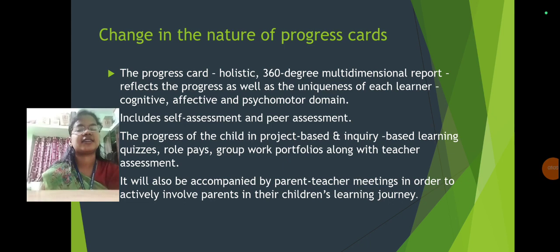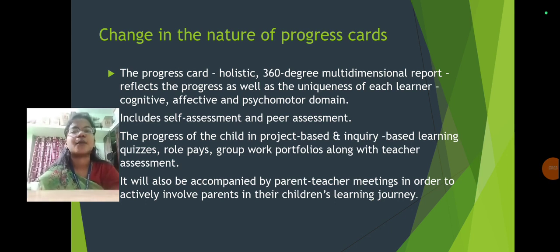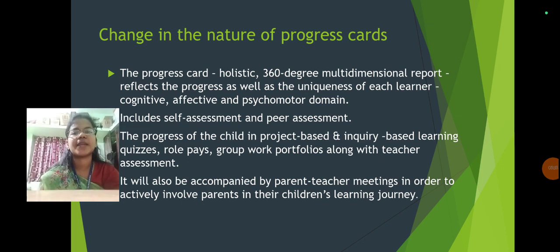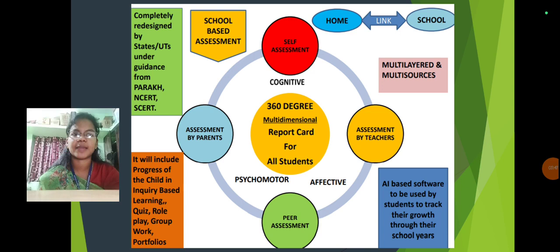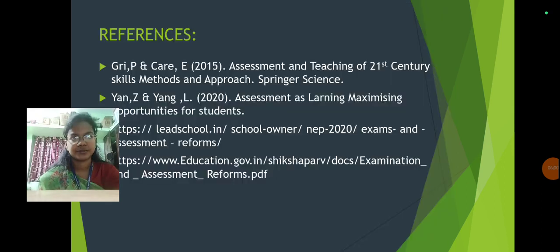NEP also brings a change in the nature of progress cards. There will be a holistic 360-degree multi-dimensional report card reflecting the progress and uniqueness of each learner across cognitive, affective, and psychomotor domains. It includes self-assessment, peer assessment, teacher assessment, and parent assessment. Progress in project-based or inquiry-based learning, quizzes, role plays, group work, and portfolios will be captured, accompanied by parent-teacher meetings to actively involve parents in their children's learning journey.